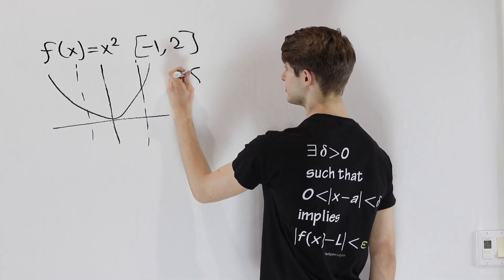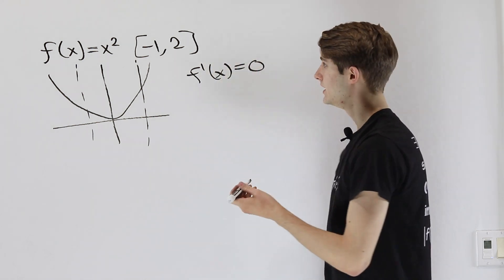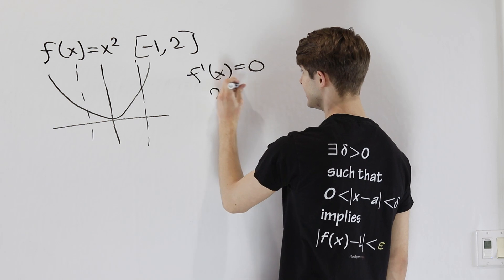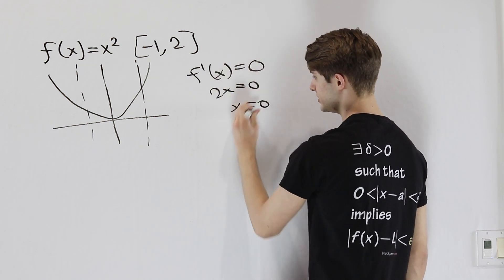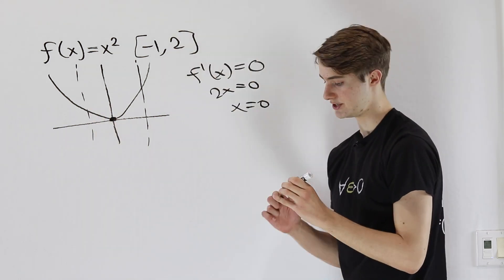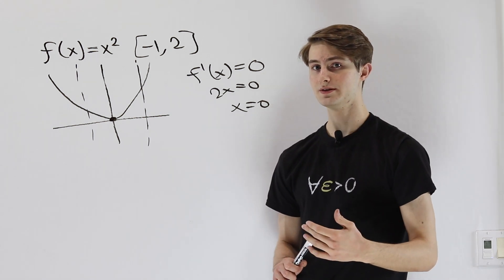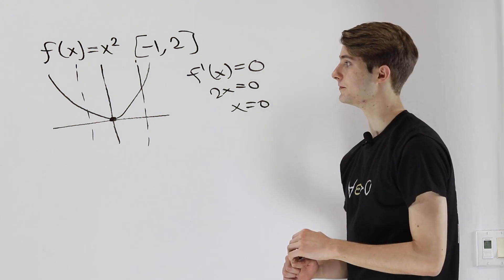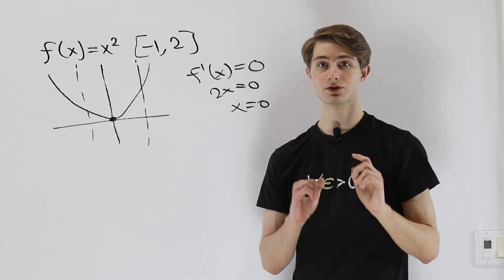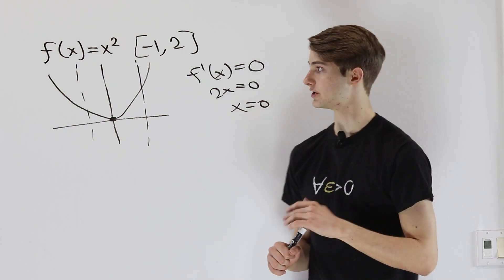The critical points are the places where f prime of x equals 0. In this case, because f prime of x equals 2x, that's going to be where x equals 0, and we see that shows up right here at the origin. The reason critical points are important — places where the derivative is 0 — is they're the only places where we can have local minimum and maximum values for a smooth function.